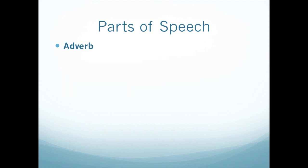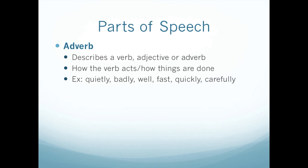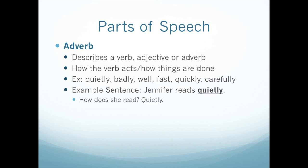Adverb — if you look at the word, it has verb in it, which helps you know it relates to verbs. Adverbs describe a verb, adjective, or another adverb. This shows you how the verb acts, or how things are done. Some example adverbs are: quietly, badly, well, fast, quickly, carefully. A lot of our adverbs end in -ly, but not all of them, because we don't say fastly. So fast is an adverb. Jennifer reads quietly. Quietly is the adverb. You can ask yourself, how does she read? Quietly. If I say she sings beautifully, how does she sing? Beautifully.